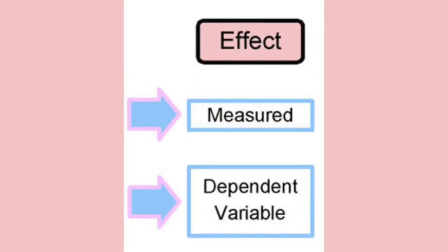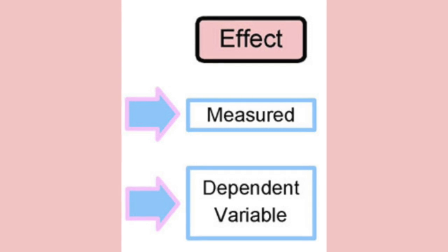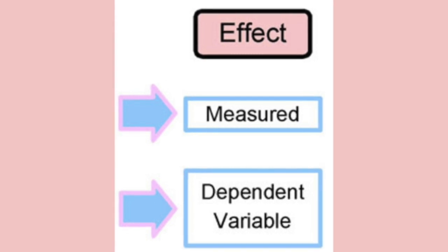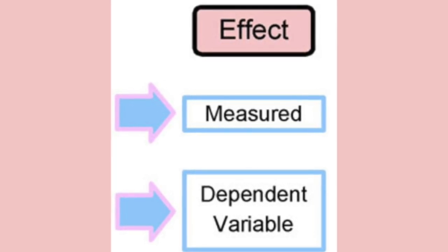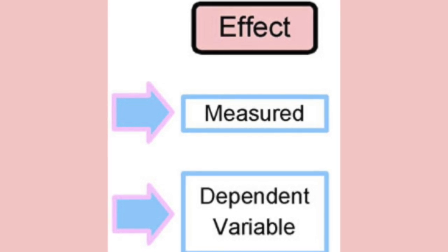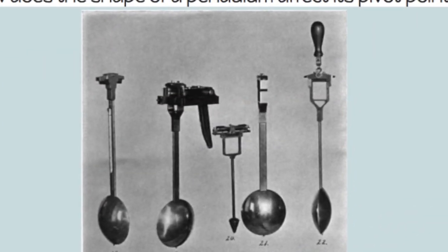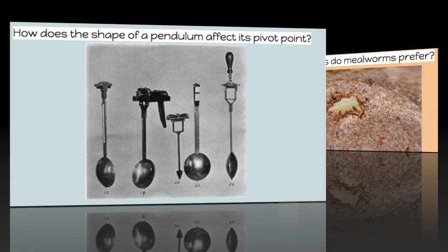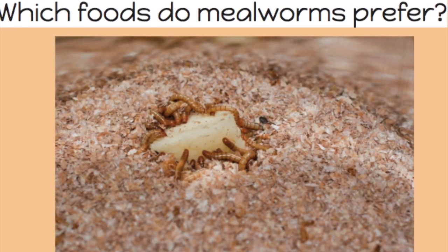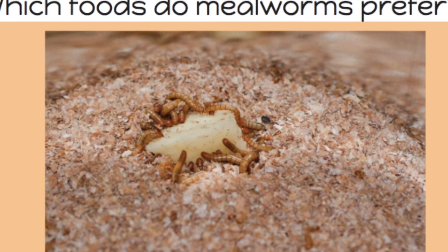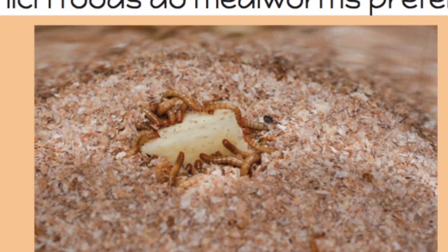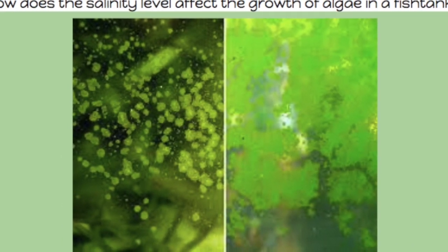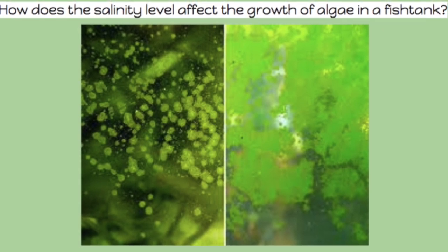The dependent variable, also known as the responding variable, is the variable in which a measurable change occurs. Some sort of numerical measurement must be recorded for each test conducted on the dependent variable. The dependent variable for the pendulum question is the measure of change in millimeters for the pivot point for each pendulum shape. For the mealworm question it is the measurement in milligrams of each food source before eaten compared to after eaten. For the algae question it is the measurement of the growth of algae in square centimeters for each salinity level.